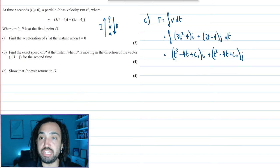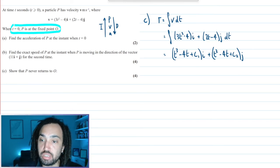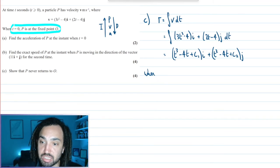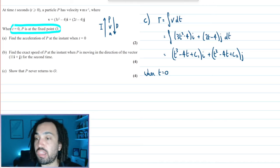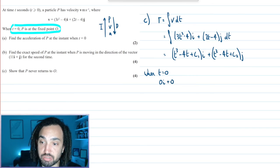Now what do we know? We need some information in order for us to find out what the constants are. And it does say here that when t is equal to 0, we know that it's at the origin. So when t equals 0, we know that we are at the origin.